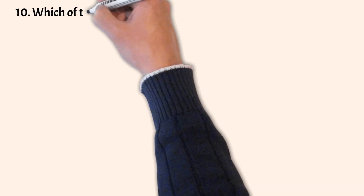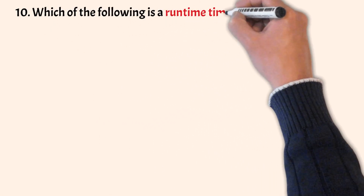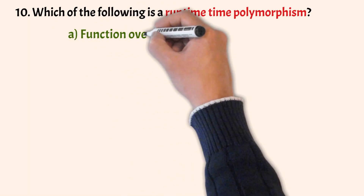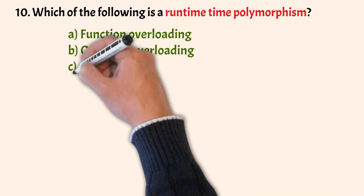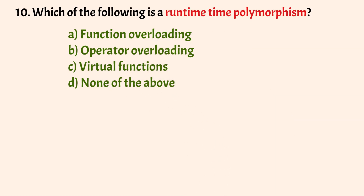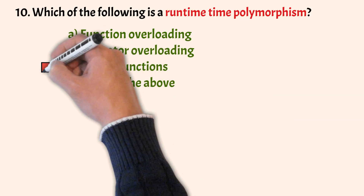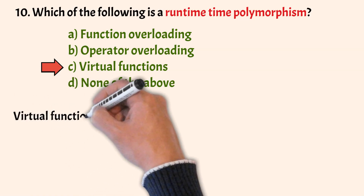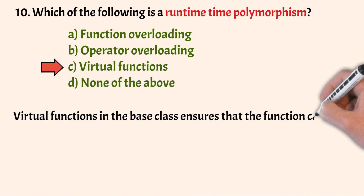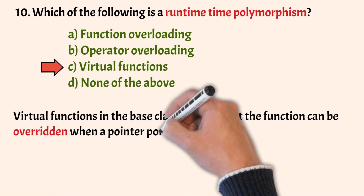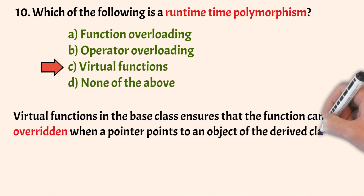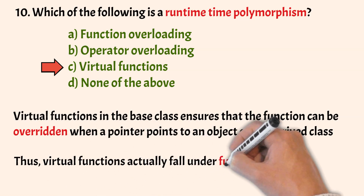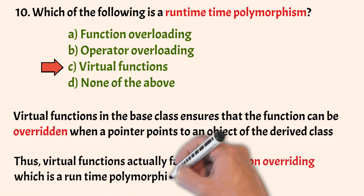Which of the following is a runtime polymorphism? The options are function overloading, operator overloading, virtual functions, and none of the above. The correct answer is option C, virtual functions. A virtual function in the base class ensures that the function can be overridden when a pointer points to an object of the derived class. Virtual functions fall under function overriding, which is a runtime polymorphism.